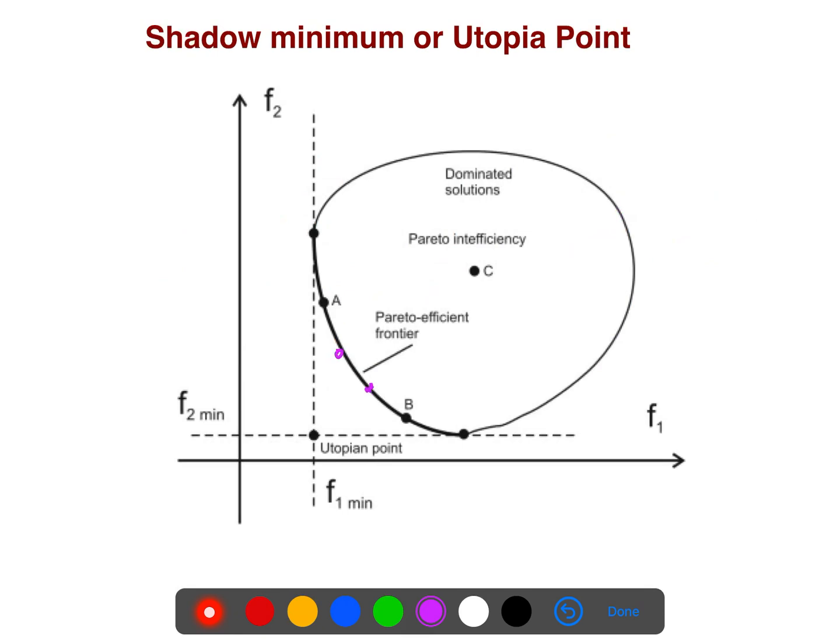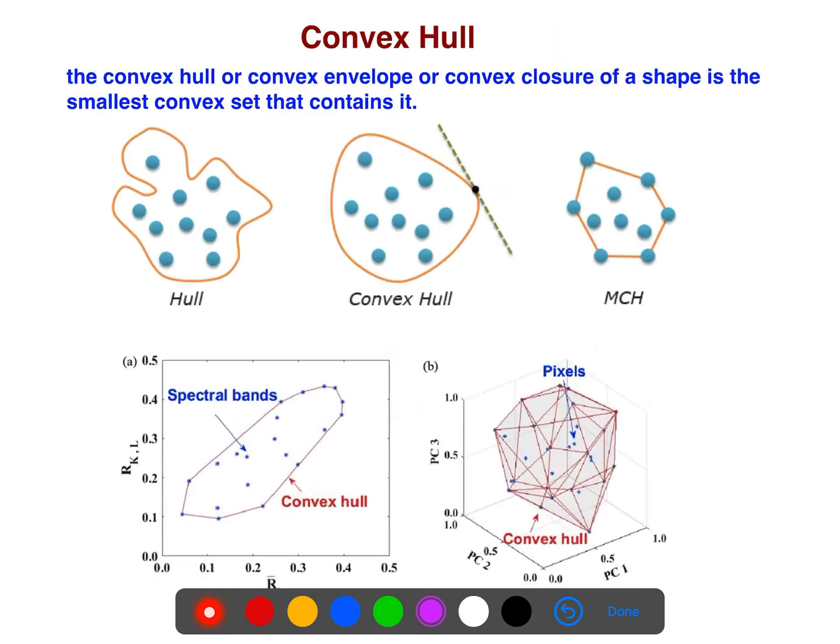So shadow minimum or utopia point - many people say utopia, but in this article it says shadow point. Both of them are relevant and equal. The utopian point is here. Regardless of F2, we minimize F1. Regardless of F1, we minimize F2. And where we put the coordinates, we have a vector here, and so we have the utopian point.